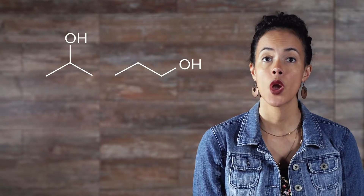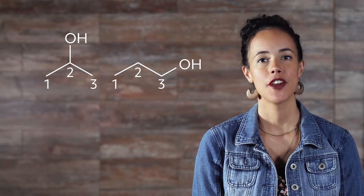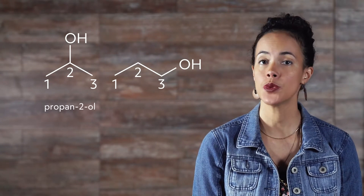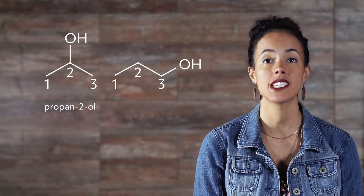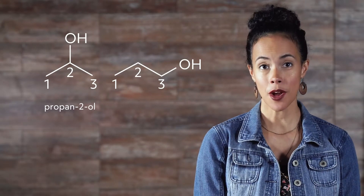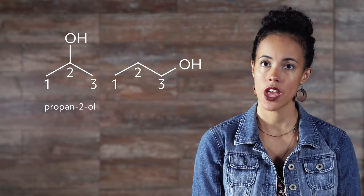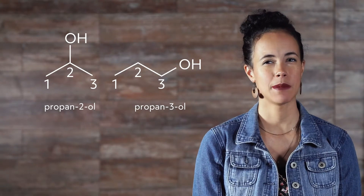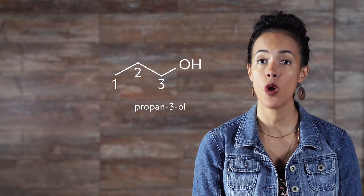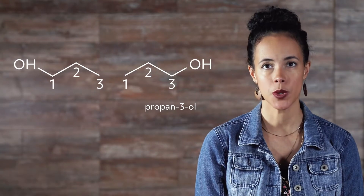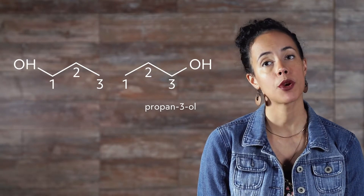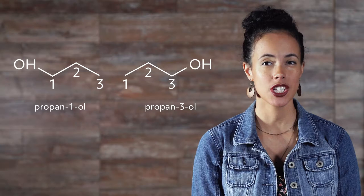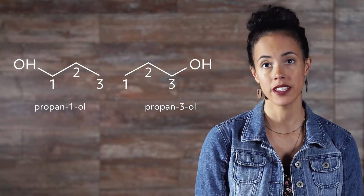Choosing to start from the left carbon, we number them 1, 2, and 3. For the first compound, the alcohol is attached to the second carbon, so it is named propan-2-ol. The 2 tells us that the alcohol is attached to the second carbon. For the second compound, the alcohol is attached to the third carbon, which would lead us to name the compound propan-3-ol. However, that name is actually never used. Notice that if the alcohol was on the first carbon, it would be chemically identical to when it is attached to the third carbon, meaning propan-1-ol and propan-3-ol are the same compound. In cases like this, the convention is to use the smaller number, so propan-1-ol is the correct name.